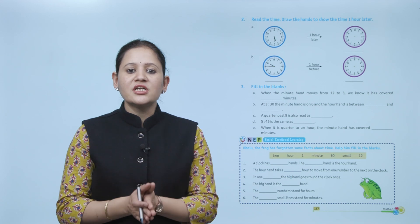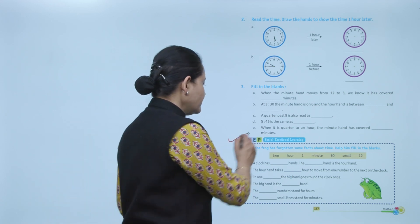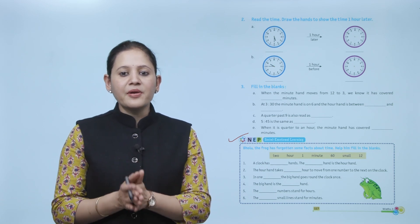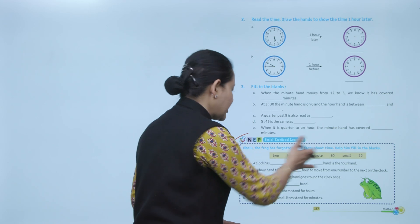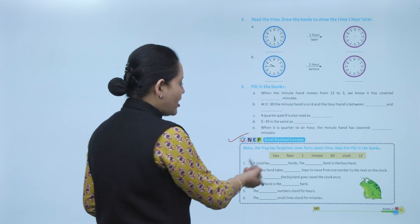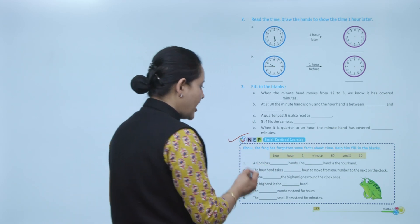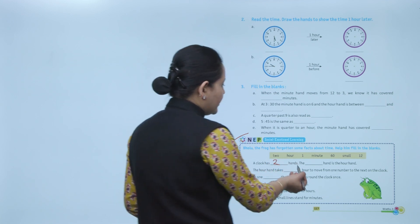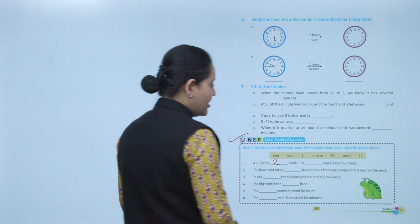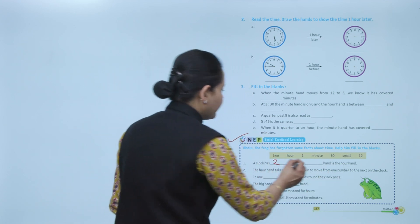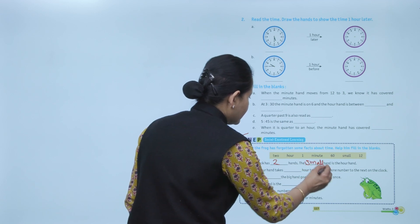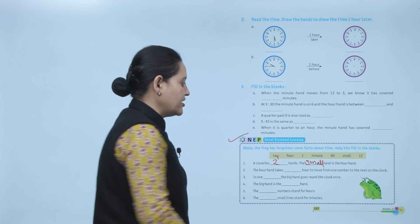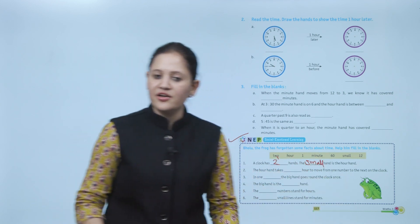Next is Social-Emotional Learning. Bholu the frog has forgotten some facts about time — help him fill in the blanks. A clock has two hands. The small hand is the hour hand. You can write the answer here: the hour hand is the small hand of the clock.